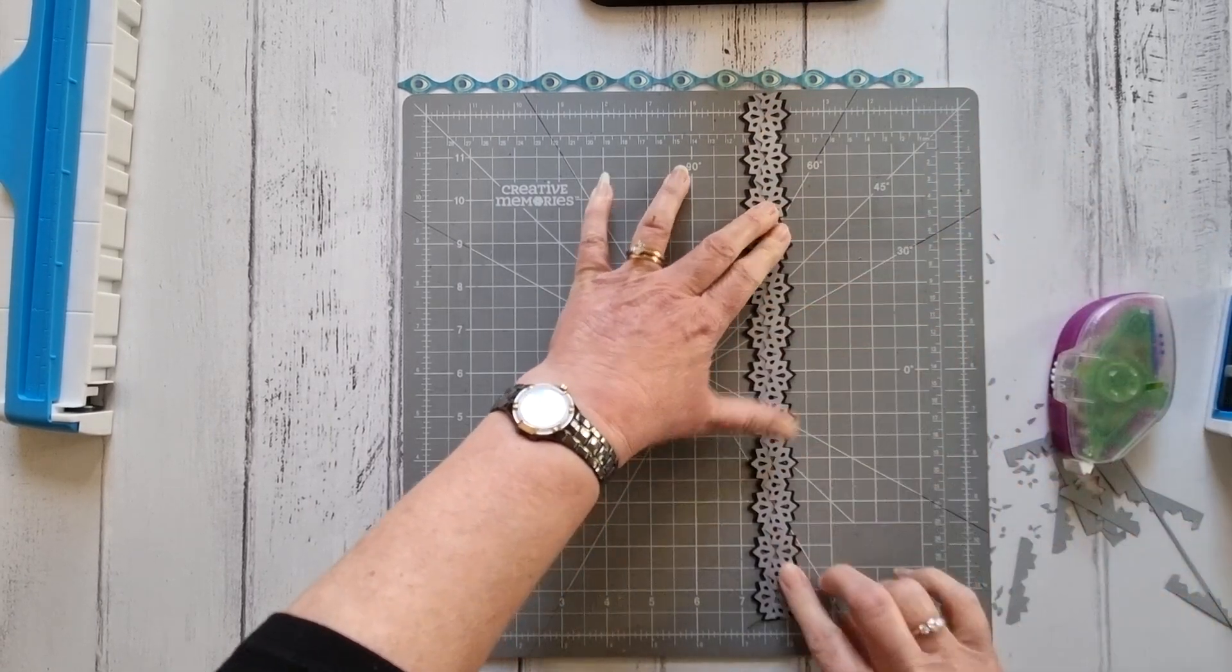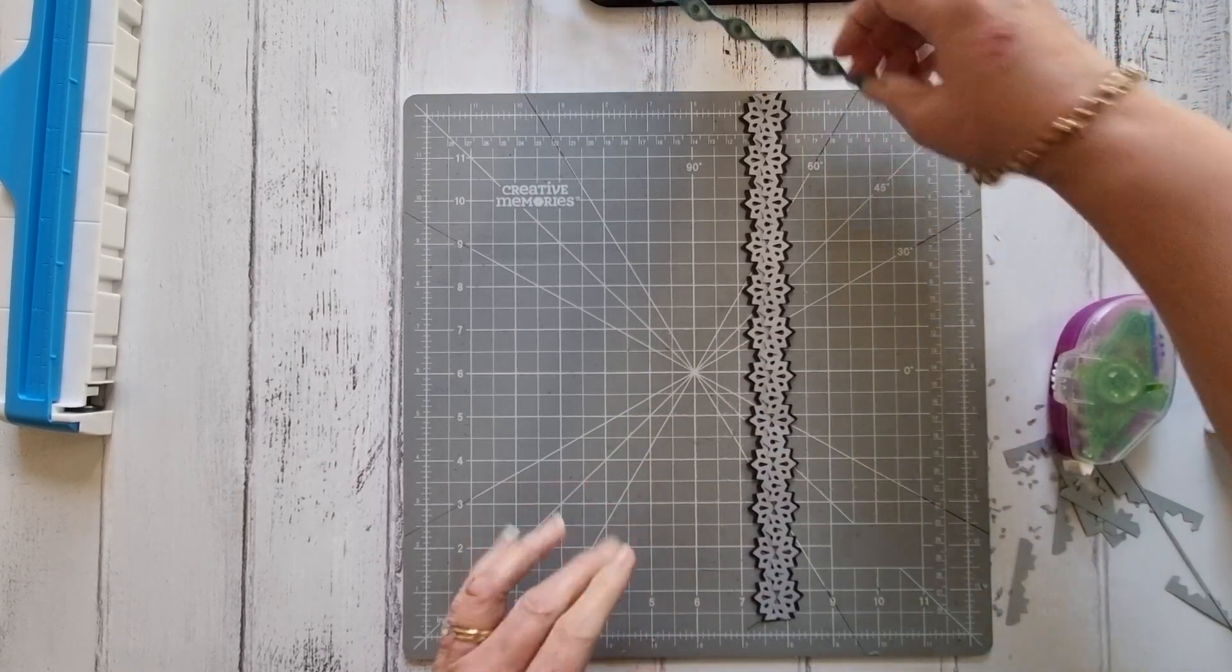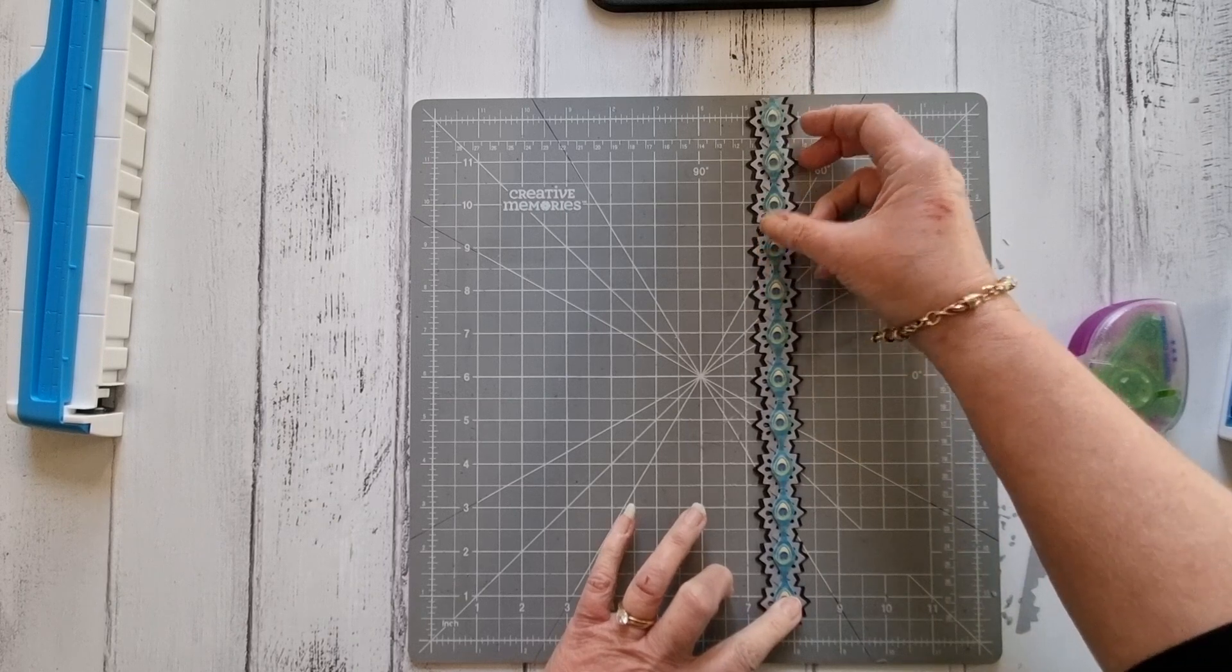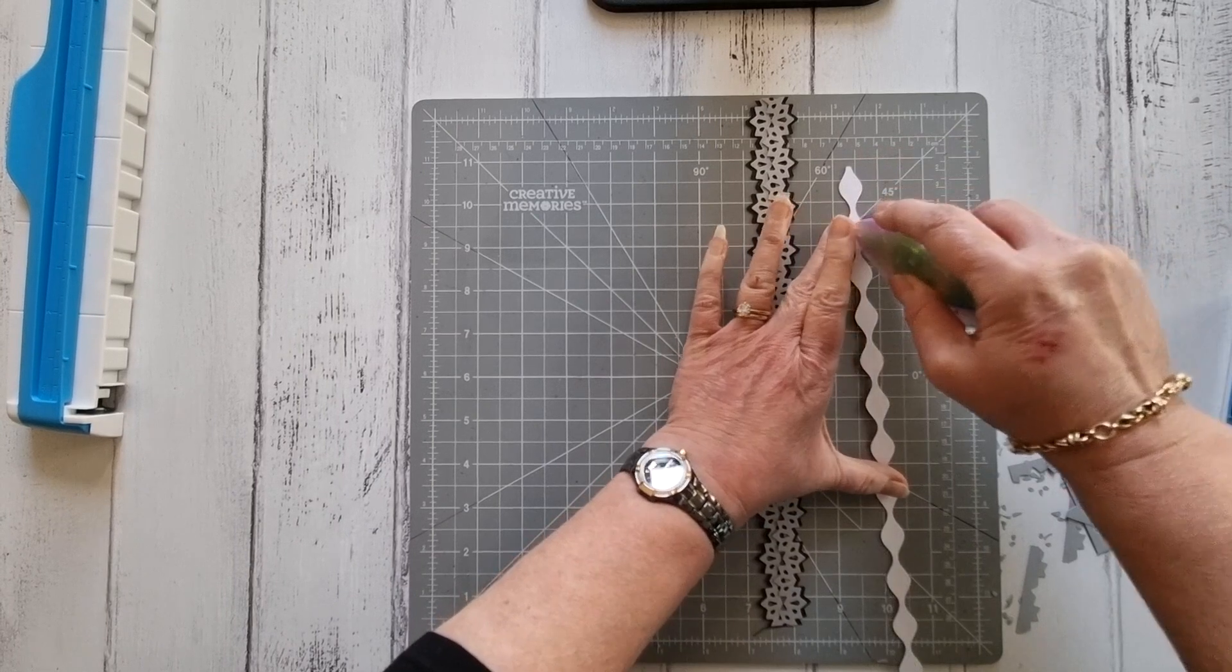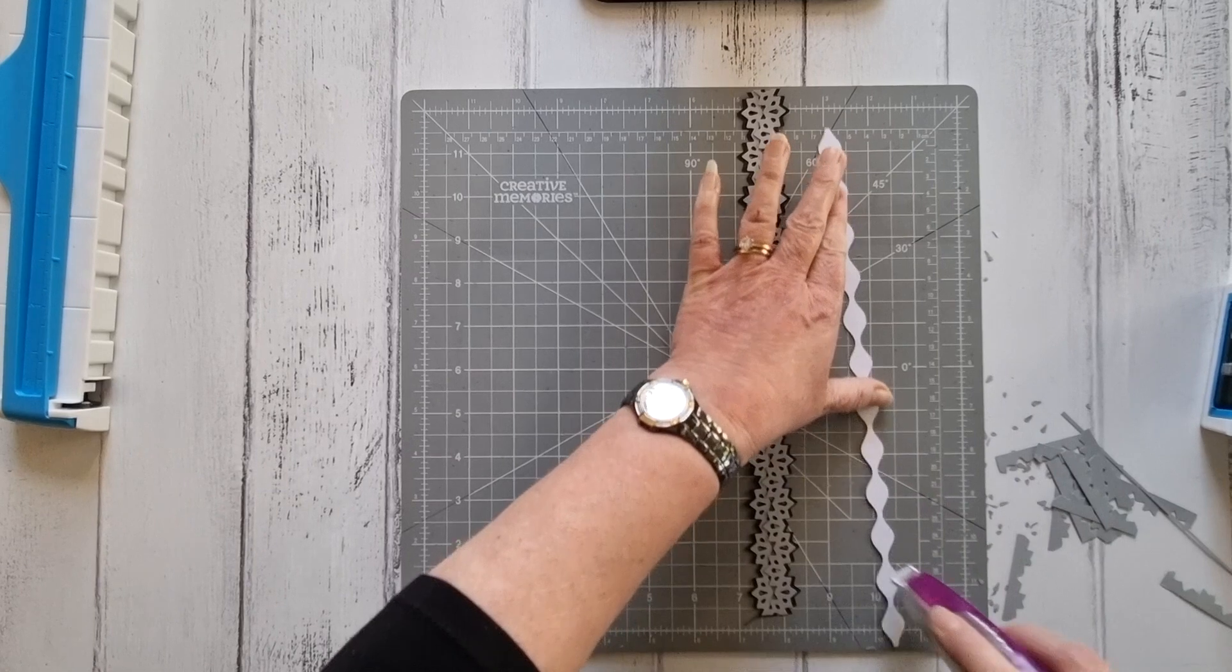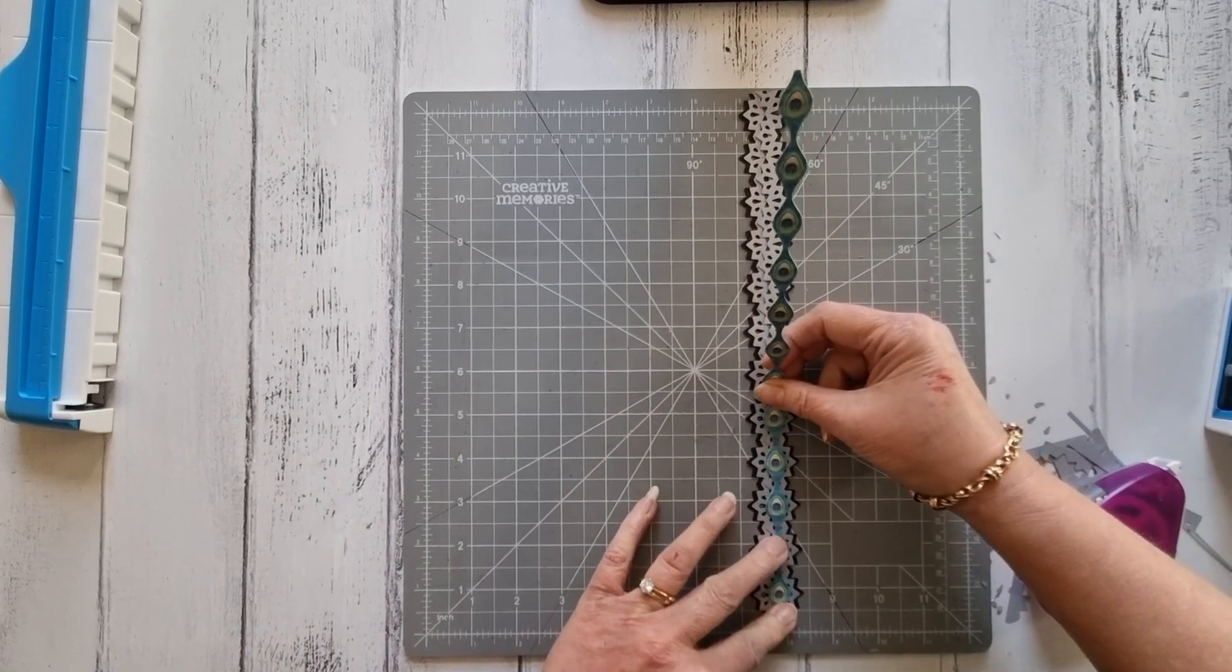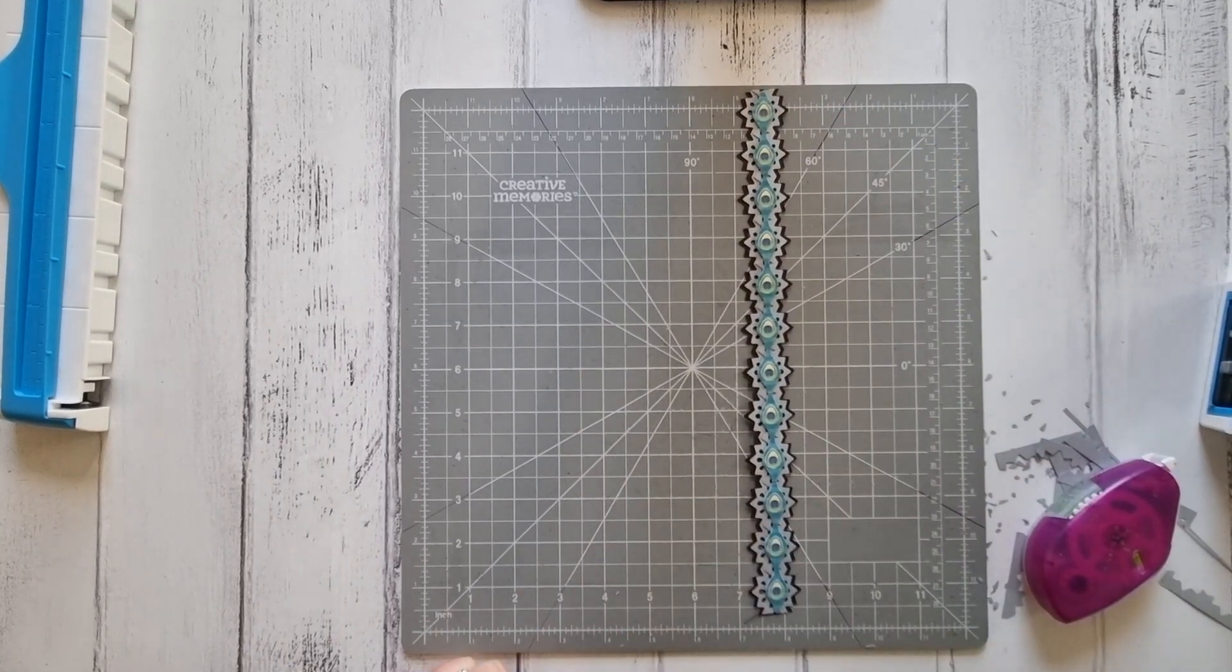Then the last part to the border is taking my laser cut strip, my emerald gemstones, and adhering that down the center. It's as easy as that. I think it's a fairly simple but very effective border. And that's it. Thank you.